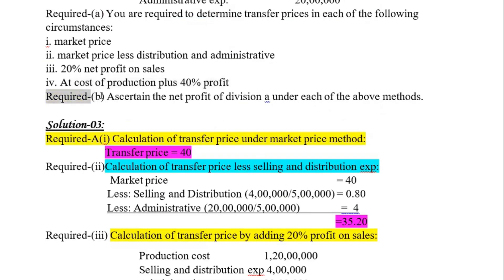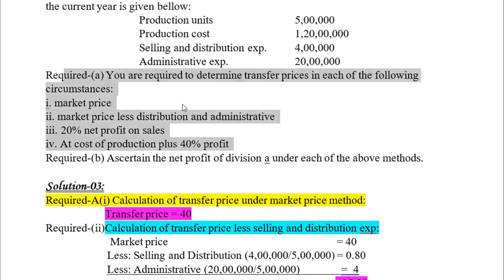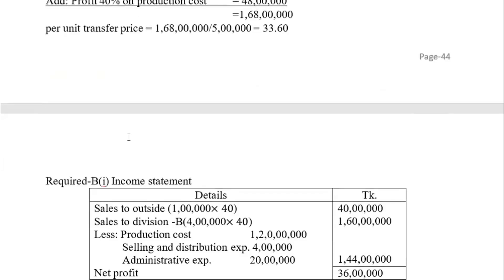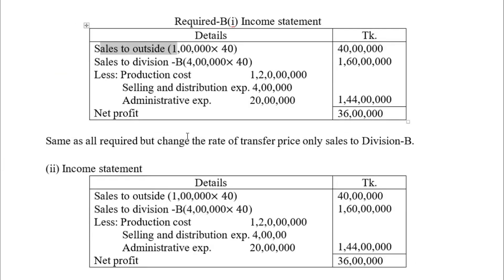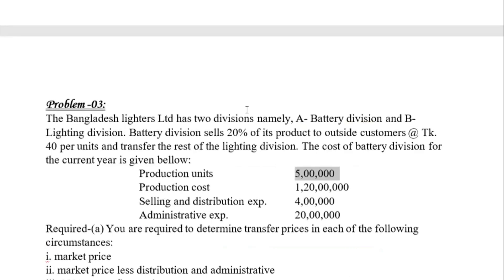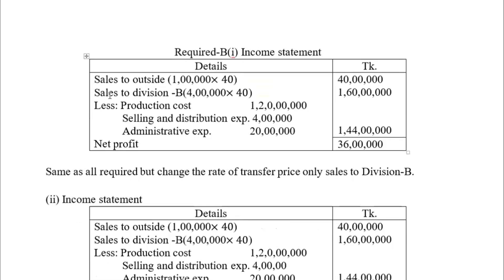Now we need to ascertain the net profit of each division under each of the above methods. An income statement will be prepared for each method. The income statement will show: cells to outside customers at 20 percent, and transfer to Division B at 80 percent. Each transfer price method gives a different result in the income statement.